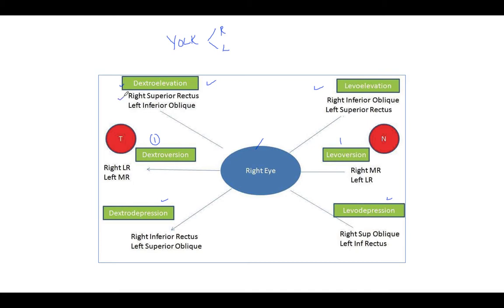In the case of dextro elevation, the yoke muscles would be the right superior rectus and the left inferior oblique — these two muscles work together for the action of dextro elevation. For dextro version, meaning seeing right, the yoke muscles are the right lateral rectus and the left medial rectus.